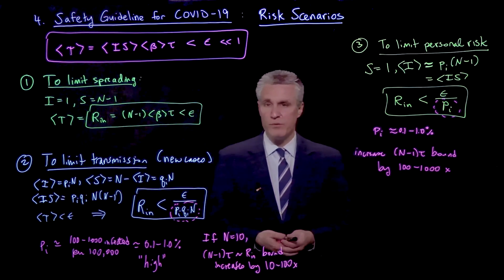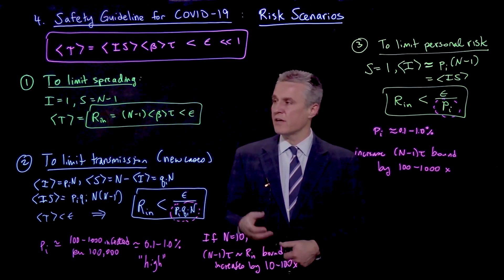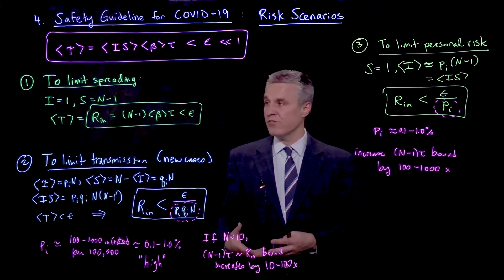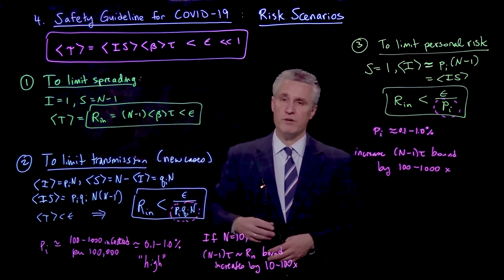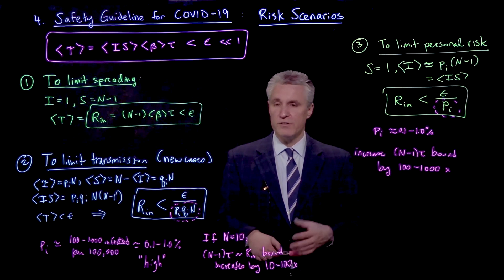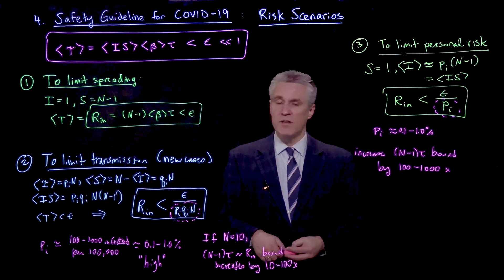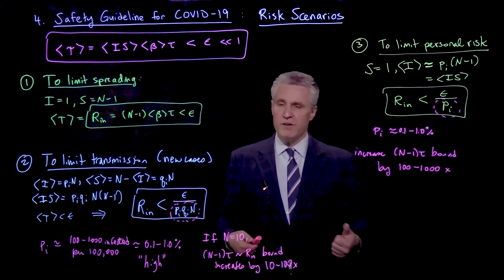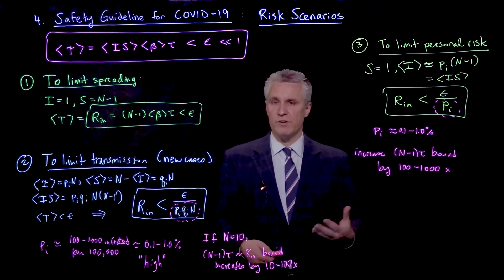So basically I just want you to keep in mind that when applying the guideline, the basic ideas don't change. We start with a bound on this reproductive number that brings in all of the physical quantities and disease quantities that we've been talking about. But we also may modify that bound a bit depending on our risk scenario.